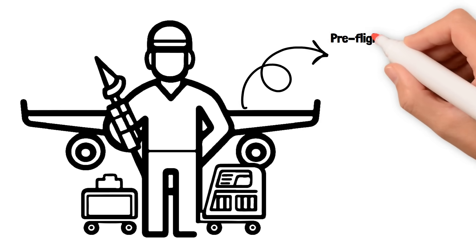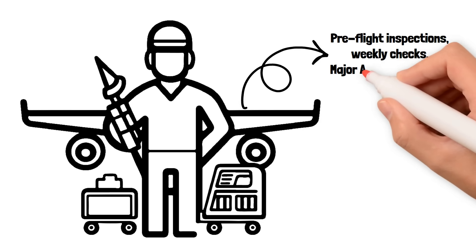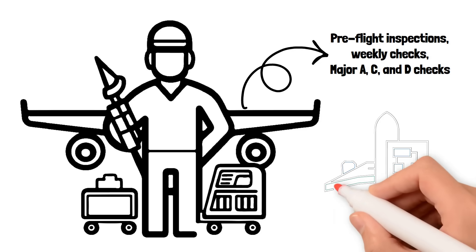Planes undergo daily pre-flight inspections, weekly checks, and major A, C, and D checks, which can take weeks and involve complete disassembly.